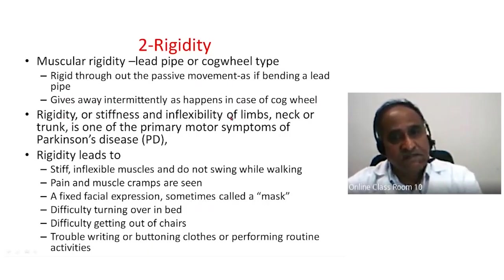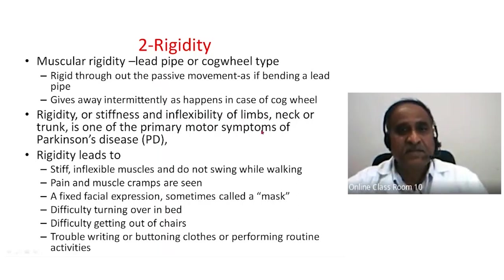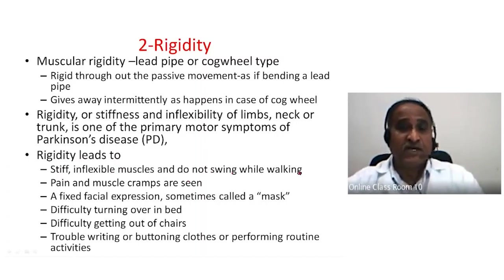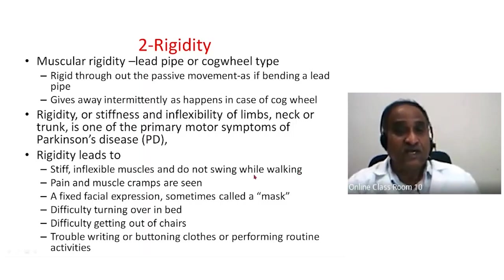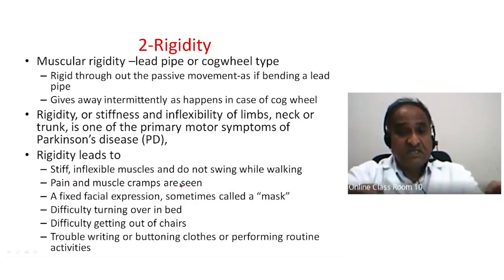The rigidity or stiffness or inflexibility can occur in the limbs, neck muscles, and trunk — it is a primary motor symptom of Parkinson's disease. Because the muscles are rigid, the person cannot swing their arms while walking. The muscles are not loose; they cannot move freely. Due to continuous muscle contraction, there may be pain and muscle cramps.